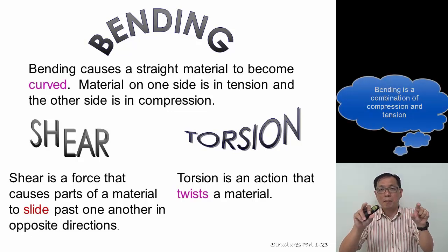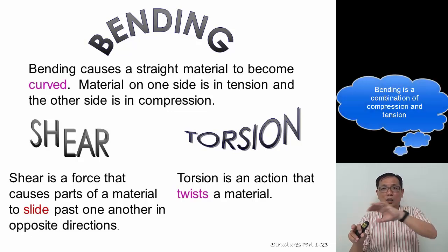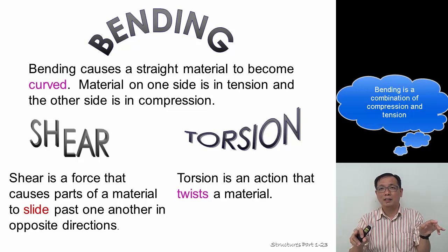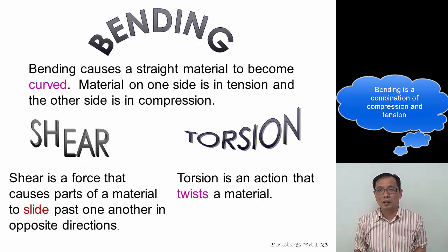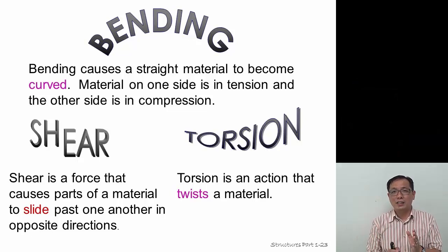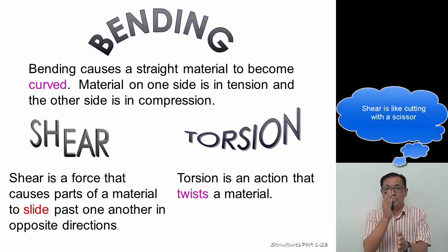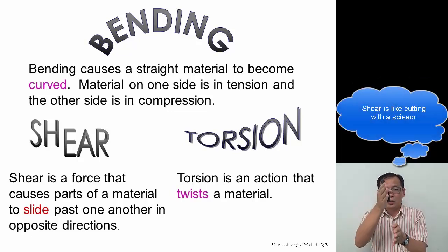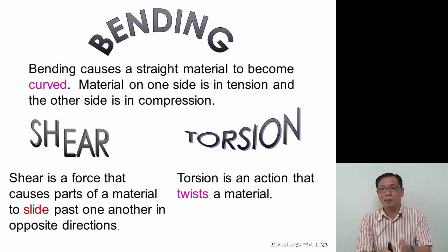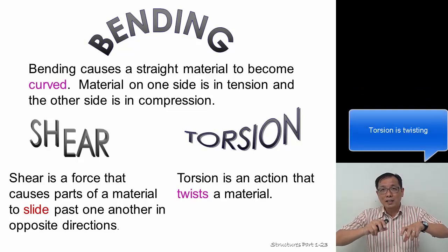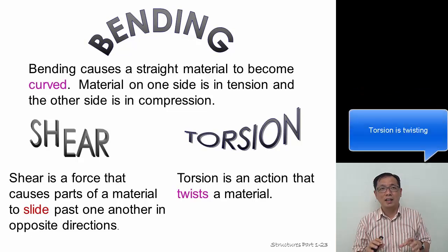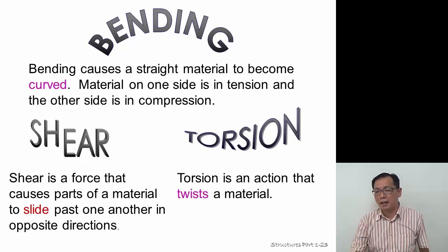For a beam under bending, the top part will be in tension and the bottom part will be in compression. Shear is when the material is caused to slide past itself — imagine scissors cutting, forcing one part to move against another. Torsion is the twisting force, when something is twisted under a strong force.